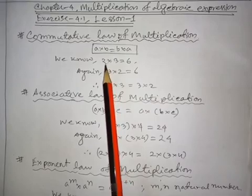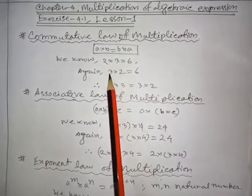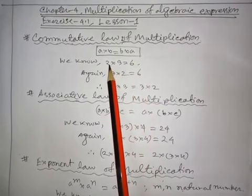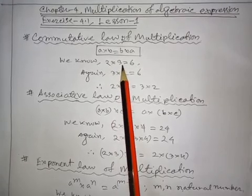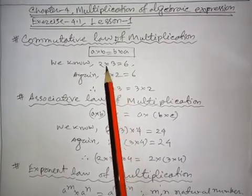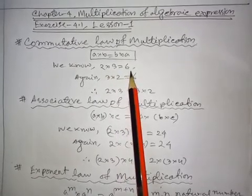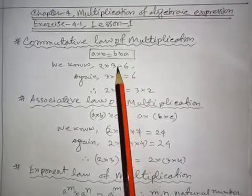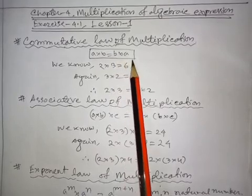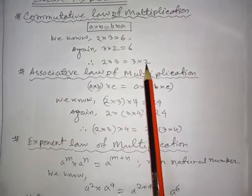Let us take an example. If we multiply 2 by 3, we get 6. If we multiply 3 by 2, that is also 6. So here 2 is the multiplicand and 3 is the multiplier, but if we swap them, 3 becomes the multiplicand and 2 becomes the multiplier. If we alter the position of multiplicand or multiplier, the product will always remain the same. So 2 multiplied by 3 equals 3 multiplied by 2.